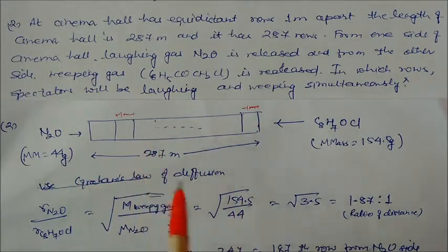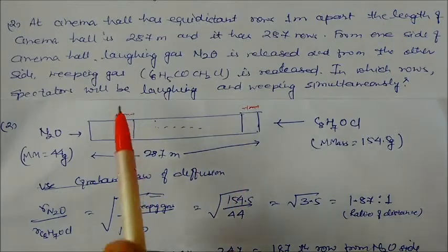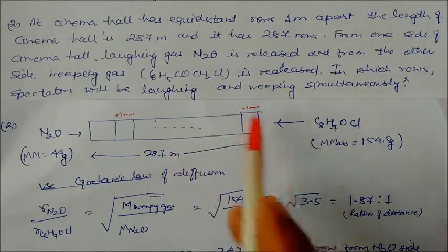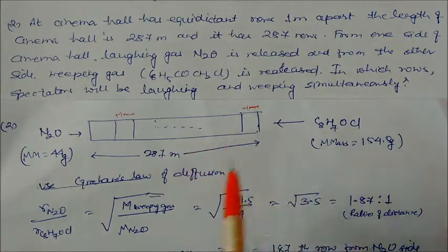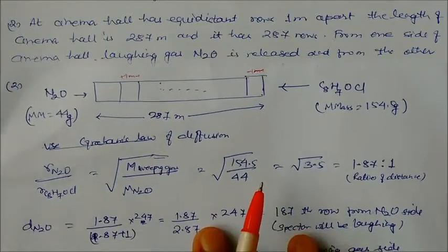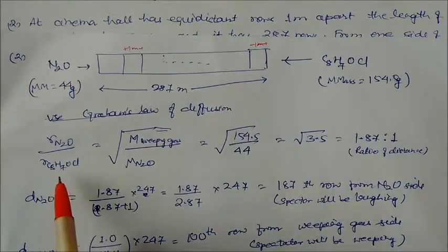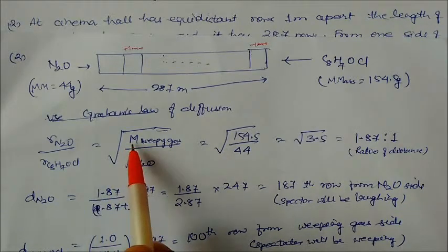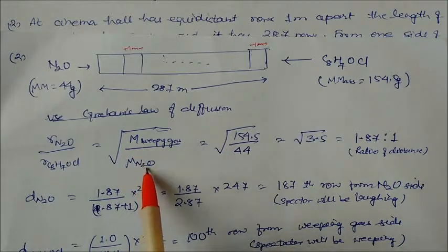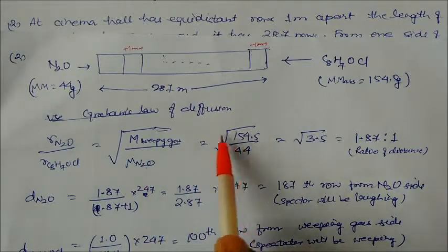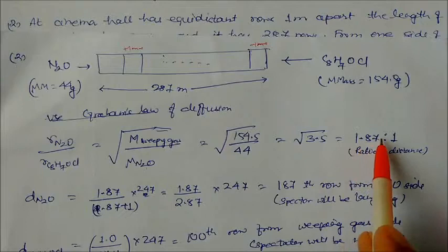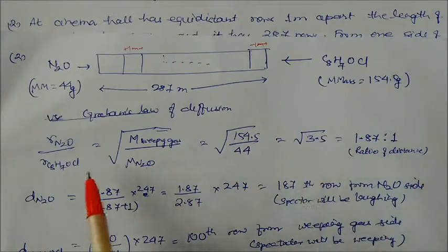There will be some rows where both gases meet together — those are where spectators will be laughing and weeping simultaneously. Applying Graham's Law of Diffusion: rate of N2O divided by rate of weeping gas equals the square root of the ratio of their molar masses (molar mass of weeping gas over molar mass of N2O). This gives a ratio of 1.87 to 1, which is also the ratio of the distances traveled.